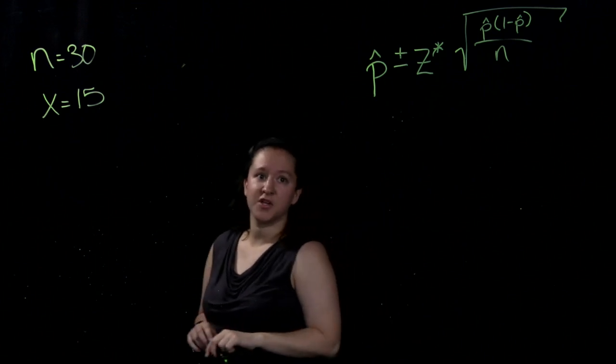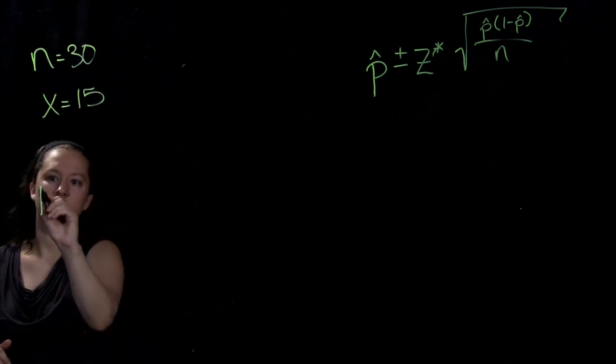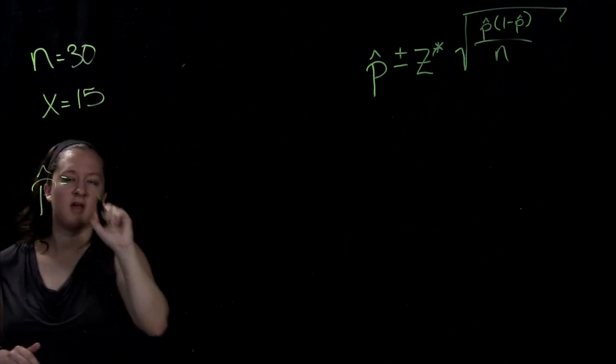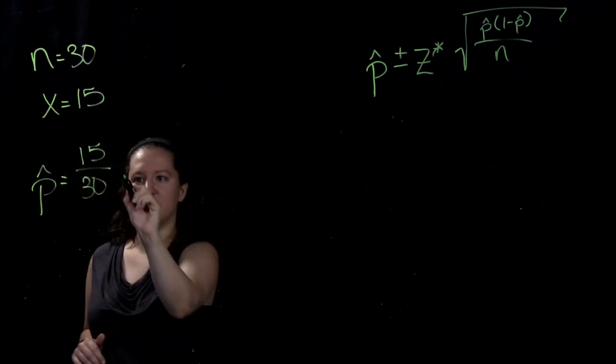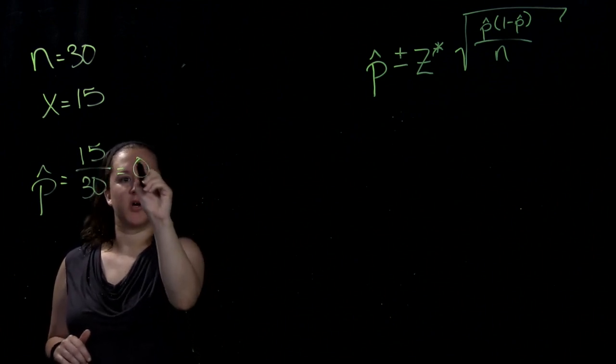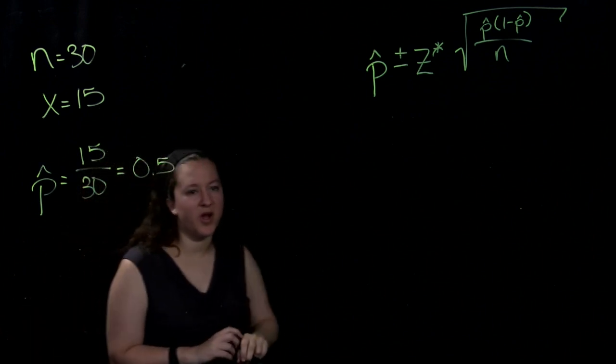So we can start by computing the sample proportion. 15 out of 30 students said yes, they're currently living in Pennsylvania, so my sample proportion is 0.5.